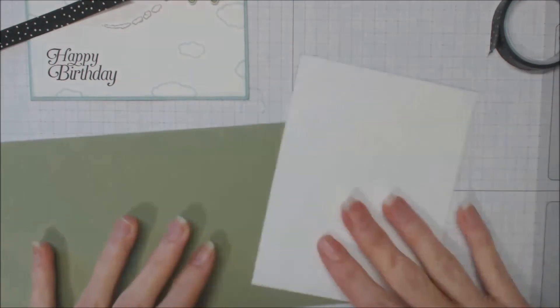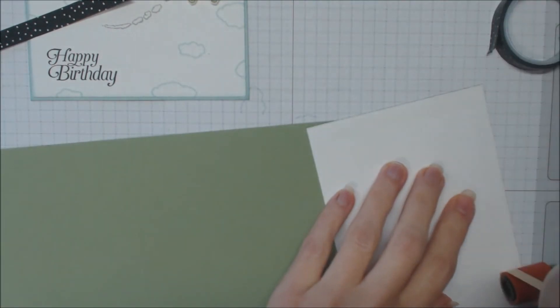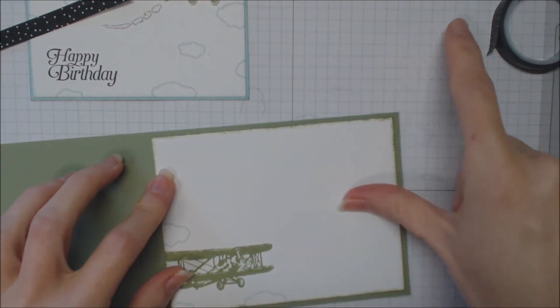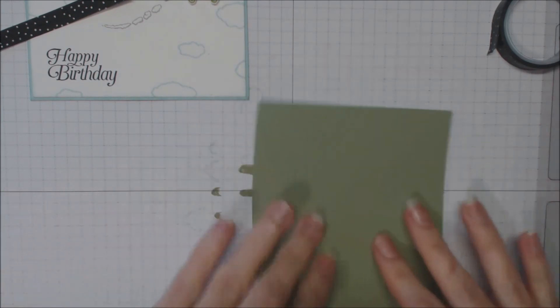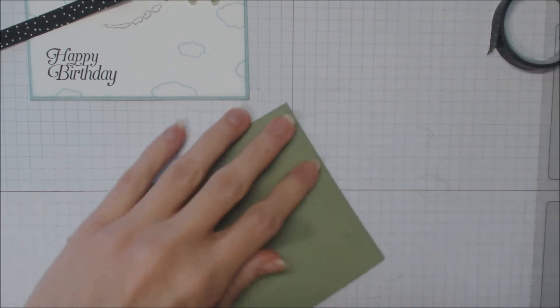This is the inside. We're going to put your adhesive of choice on that inside panel. I've got lots of room for my message. I'm going to go ahead and fold that on our bone folder across that. It helps it stay a little flatter.